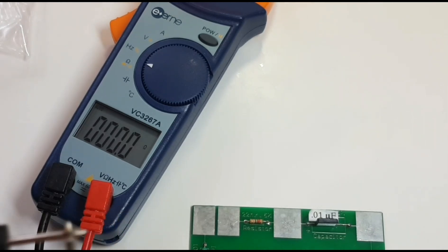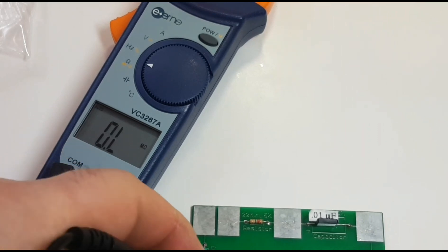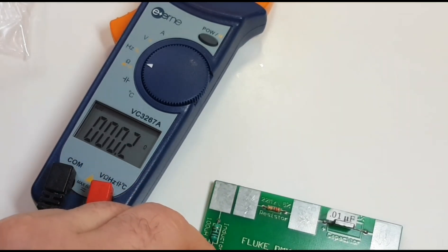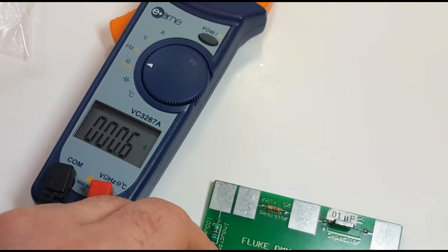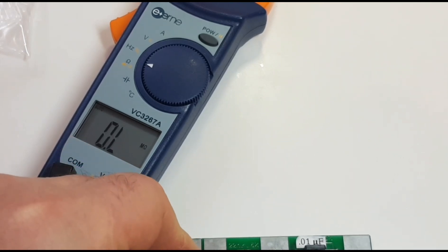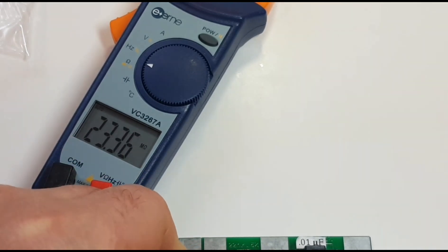All right, first off we are going to look at a 0.5 ohm resistor. That was 0.6, not too bad, off by 0.1 ohm. And here we have a 22 megaohm resistor. It's just under one megaohm difference. I think that's a pass.